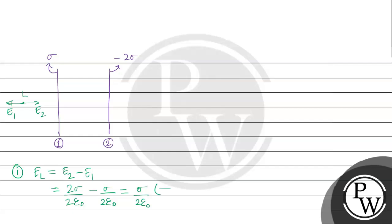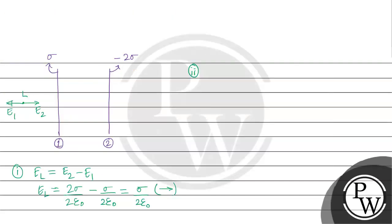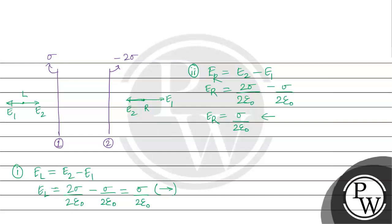Next part: to the right of the second sheet. For the minus 2 sigma sheet, E2 points to the right. For the sigma sheet, E1 also points to the right. The magnitude of E2 is 2 sigma by 2 epsilon naught, and E1 is sigma by 2 epsilon naught. The net result is sigma by 2 epsilon naught directed to the right.